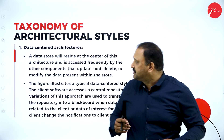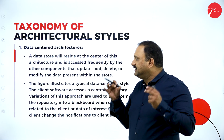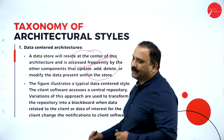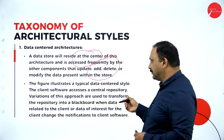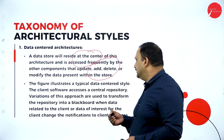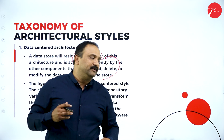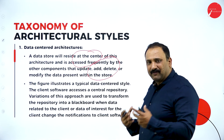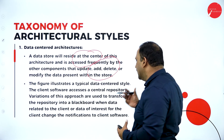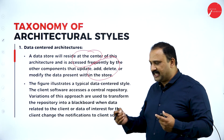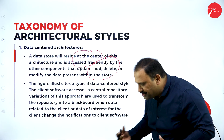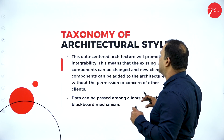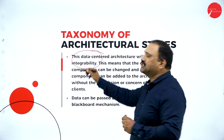Now let's move further to understand the taxonomy. The first one is data-centered architecture. A data store resides at the center of this architecture and is accessed frequently by other components that update, delete, or modify the data present within the store. We also want to understand how this illustrates the repository and the various approaches used in terms of transformation when data related to the client changes. Data-centered architecture promotes integrability — integrating components altogether.